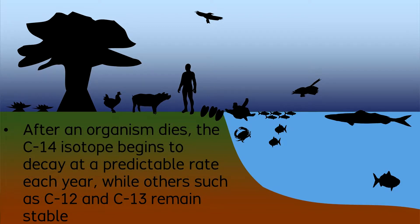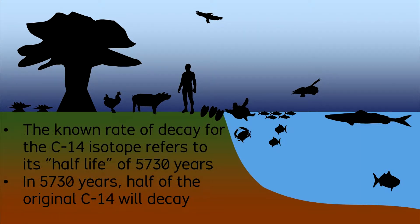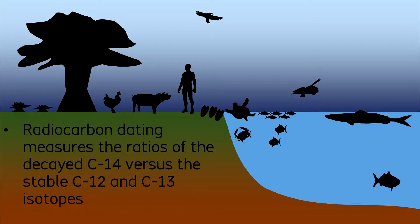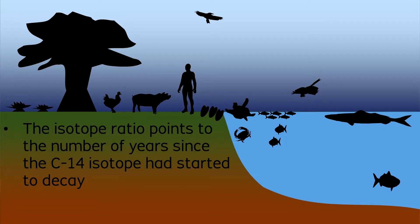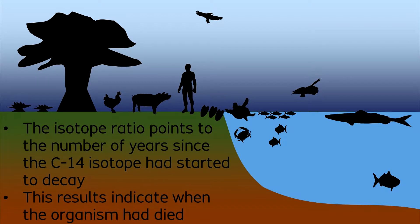After an organism dies, the C-14 isotope begins to decay, while other isotopes such as C-12 and C-13 remain stable. The C-14 isotope decays at a steady rate, calculated with a half-life of 5,730 years. If you can measure the amount of C-14 as compared to C-12 and C-13 in a sample specimen, then you can use this ratio measurement to point to the number of years since the C-14 isotope had started to decay. This ratio measurement is the essence of radiocarbon dating.